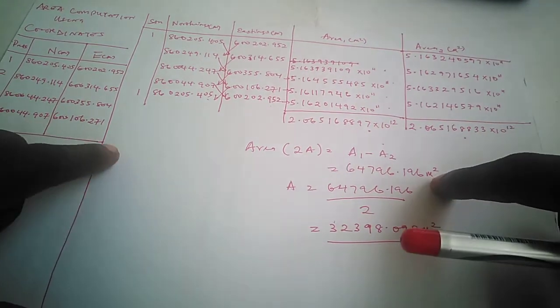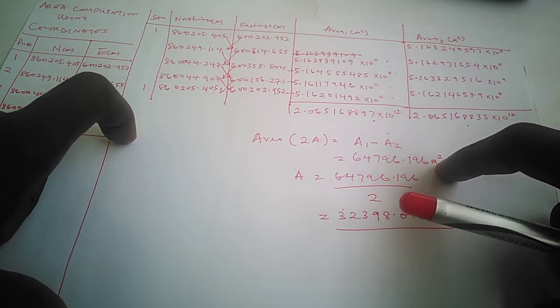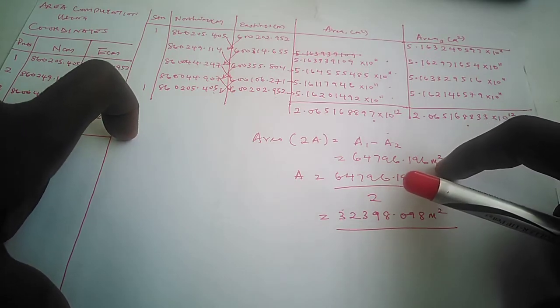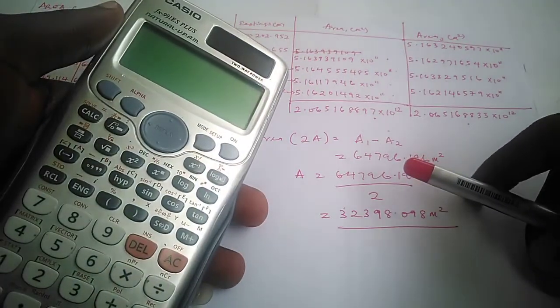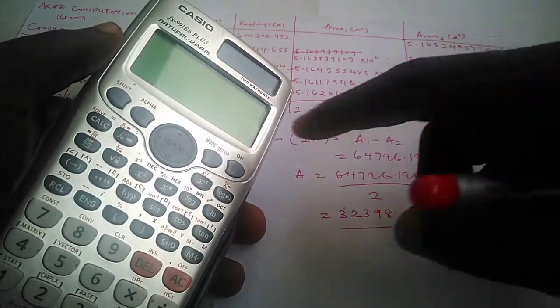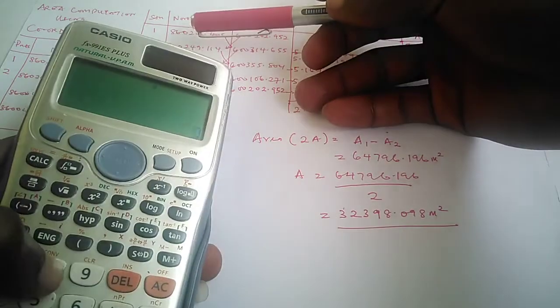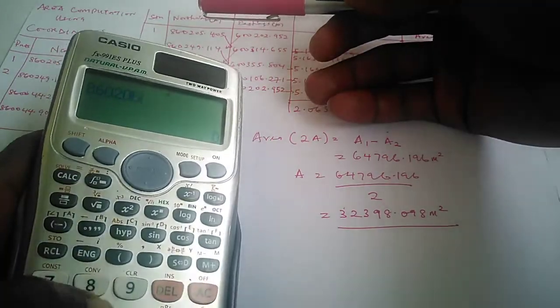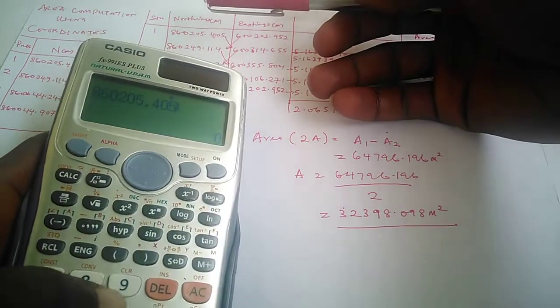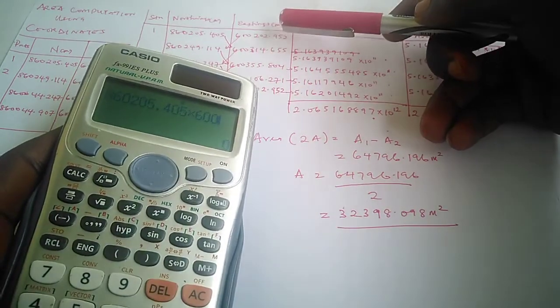Another thing I want to tell us on this video is that to make the work faster and smoother and to avoid some personal error, I'll advise us to store the products on our calculators. On this calculator we have alphabets A to F, we have X, Y, and M where we can store values.